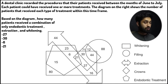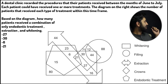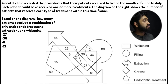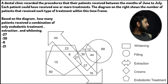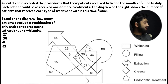Here is an Euler diagram question. You can pause the video and have a go yourself or watch me attempt it. A dental clinic recorded the procedures their patients received between June and July. Each patient could have received one or more treatments. The diagram shows the number of patients that received each type of treatment within this time frame.